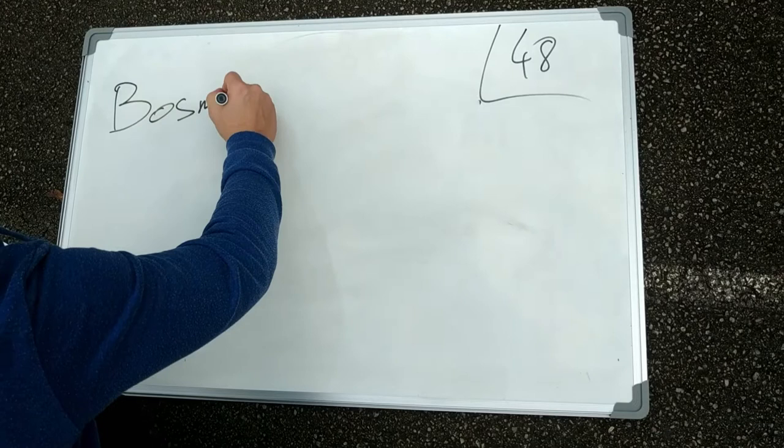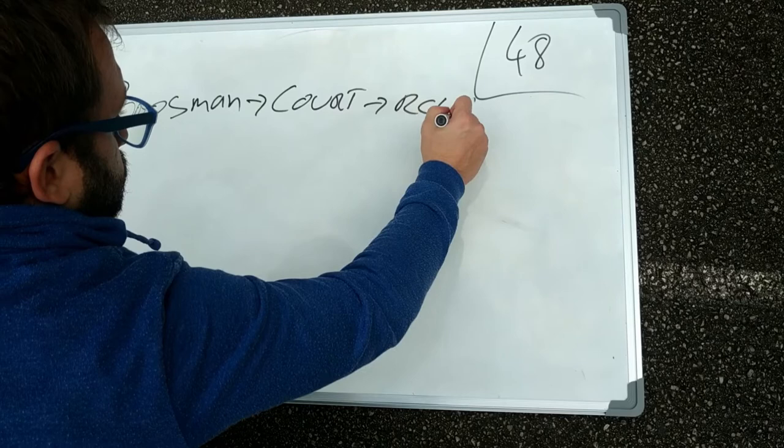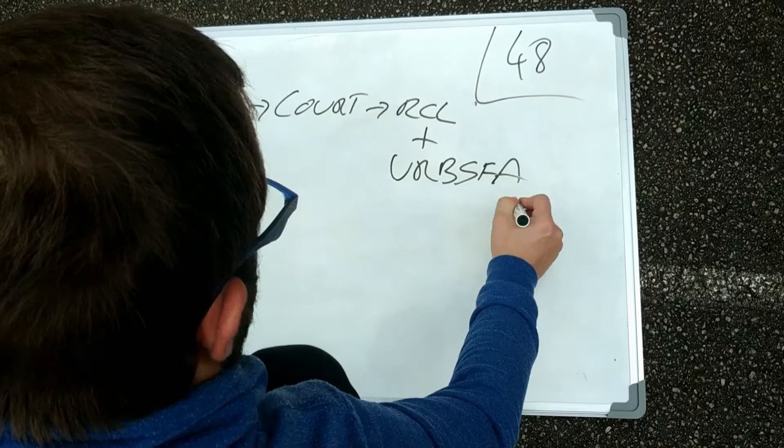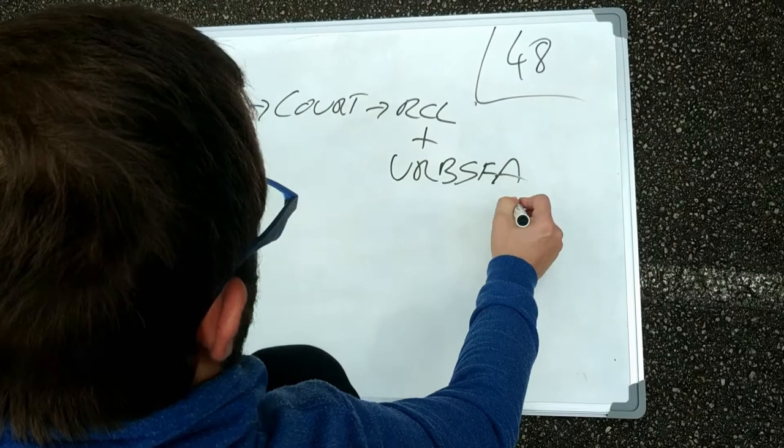August 8th 1990, Bosman brought to the court of first instance an action against RC Liège, with an application for an interlocutory decision ordering RC Liège and URBSFA to pay him in advance 100,000 BFR per month until he found a new employer.